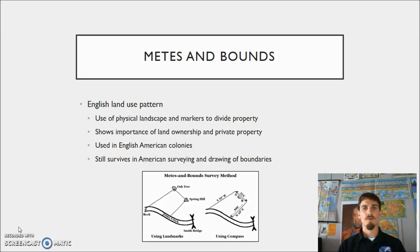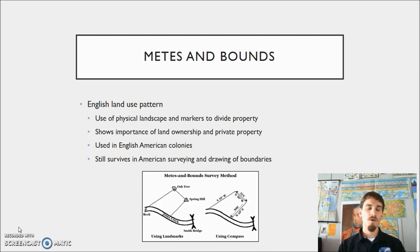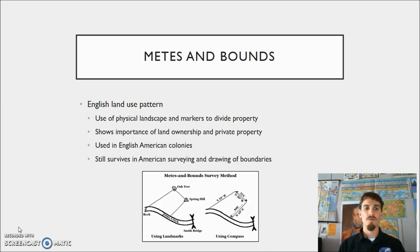The first type of land use pattern we're going to look at is the metes and bounds system. This particular system was used by the English when they came to the United States — they had actually used it in England prior, so it was part of their tradition. When they came to the United States, they continued that tradition and used it to subdivide land on the North American continent. The way the metes and bounds system works is by taking things that are already on the landscape — whether part of the physical geography or the built space — and incorporating them into the boundaries that are created.